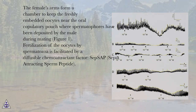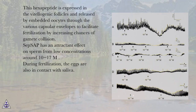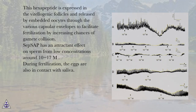Fertilization of the oocytes by spermatozoa is facilitated by a diffusible chemotractant factor, Seb-SAP, sepia-attracting sperm peptide. This hexapeptide is expressed in the vitelogenic follicles and released by embedded oocytes through the various capsular envelopes to facilitate fertilization by increasing chances of gamete collision. Seb-SAP has an attractant effect on sperm from low concentrations around 10⁻¹⁷ M.